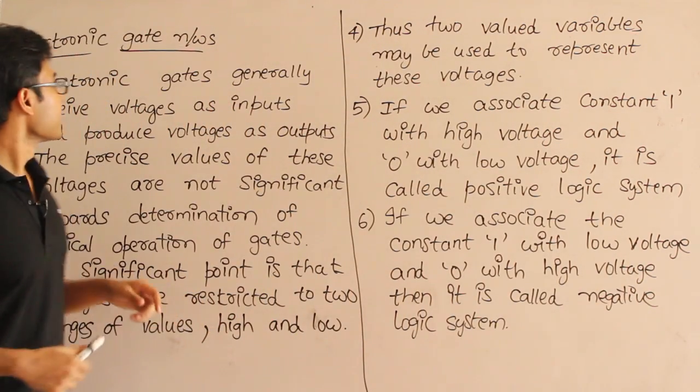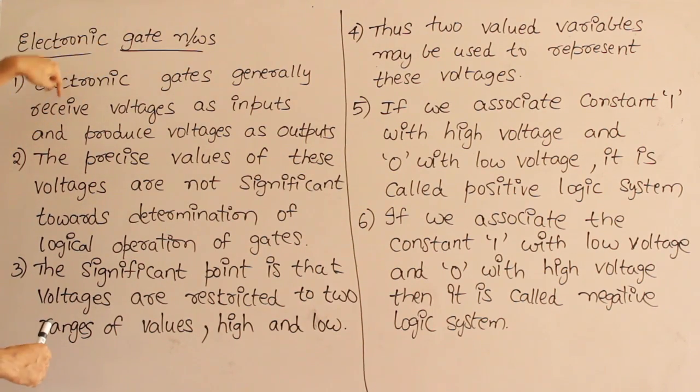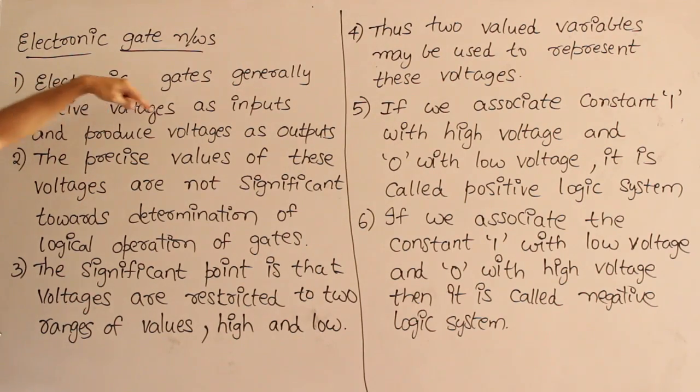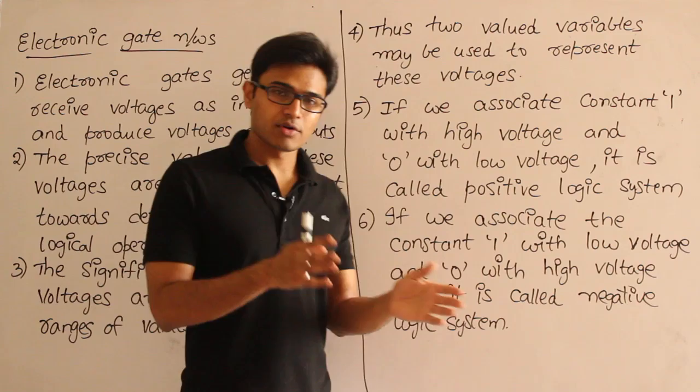Electronic gates generally receive voltages as input and produce voltages as output. Which means you give some input and they are going to give you some output.